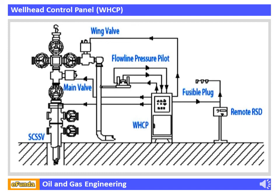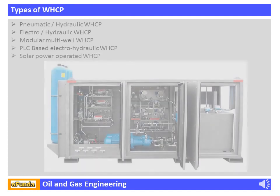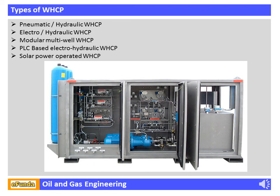Usually the well head control panel is placed about 100 meters away from the well head or Christmas tree, and the hydraulic or pneumatic output from the panel is connected to the well head through properly sized tubes. A typical interface with the Christmas tree and well head can be seen from the figure. Types of well head control panels include: pneumatic hydraulic, electro-hydraulic, modular multi-well, PLC-based electro-hydraulic electric, and solar power operated well head control panels.